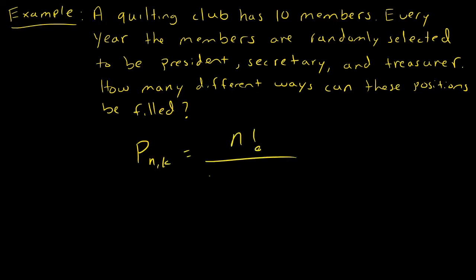So what is the formula? And how do we use it? So n is our total number of elements that we're selecting from. In this case, we have 10 members. How many positions need to be filled? That's what k is. One, two, three. President, secretary, and treasurer. So we have P 10,3. 10 factorial divided by 10 minus 3 factorial.